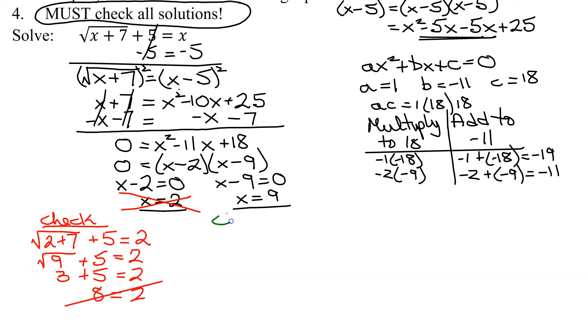So now let's check x equals 9. Again, plugging 9 in here and here in the original equation. Does the square root of 9 plus 7, both under the radical, plus 5, should equal x, which was 9. So the square root of 9 plus 7 is 16, plus 5, does it equal 9?